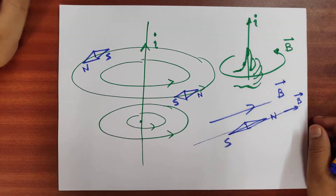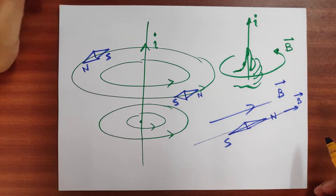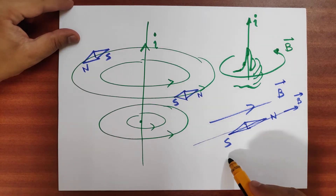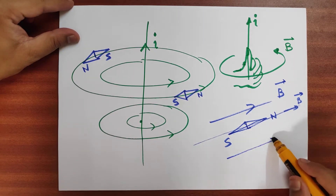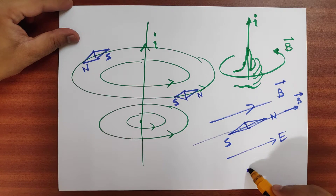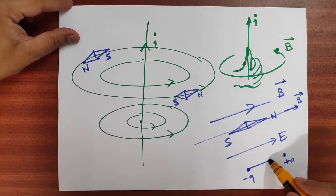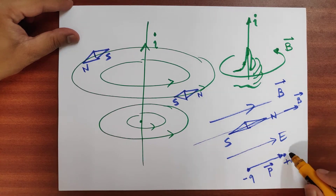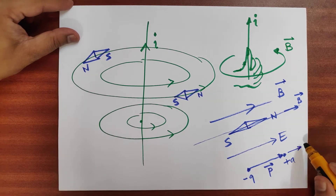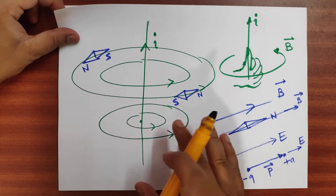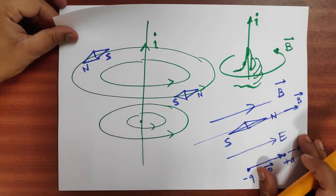This is similar to the electric dipole. In the case of the electric dipole, you have an electric field E, and the most stable configuration of the dipole is when the electric dipole moment is parallel to the field E.